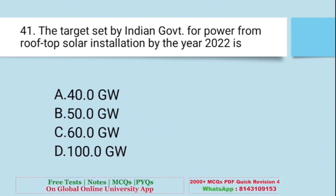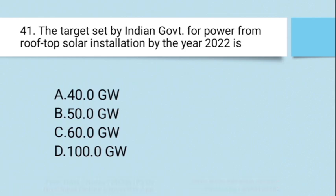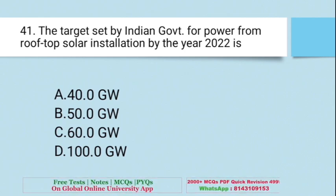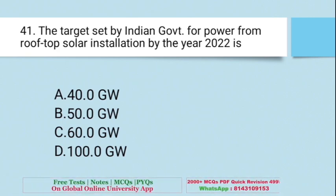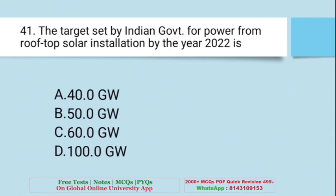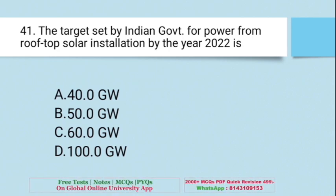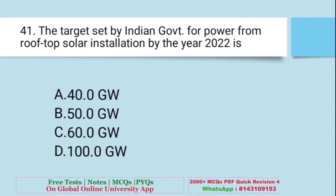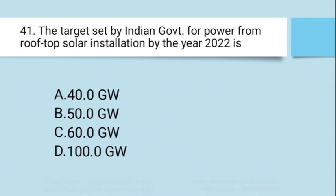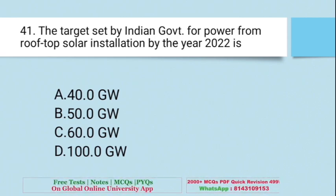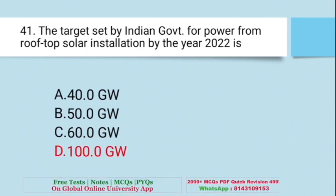Question: The target set by the Indian government for power from rooftop solar installation by the year 2022 is — A. 40.0 GW, B. 50.0 GW, C. 60.0 GW, D. 100 GW. The right answer is D — 100 GW.